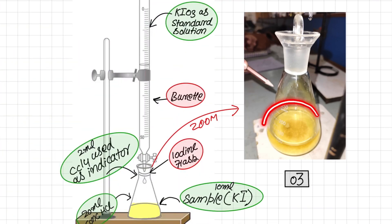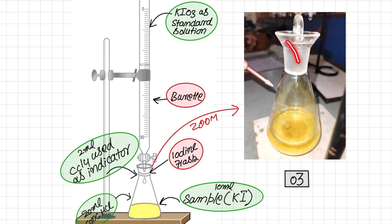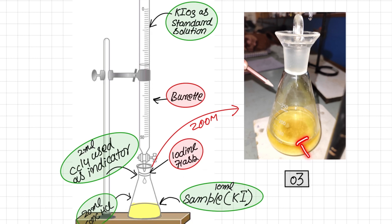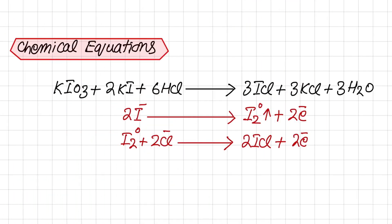At the final stage — the end point — the dark brown ring has gone and two layers are formed. There is an organic layer and an aqueous layer. The aqueous layer formed is due to the addition of distilled water used to rinse potassium iodate from the cap region of the iodine flask. The organic layer has become colorless while the aqueous layer has turned pale yellow due to formation of the final product, iodine chloride (ICl).